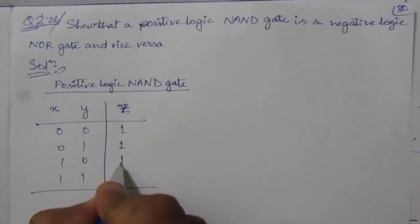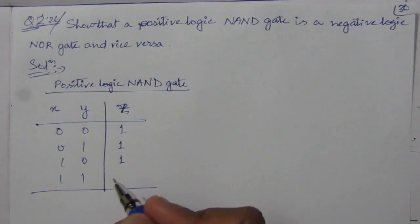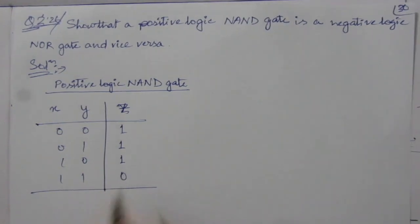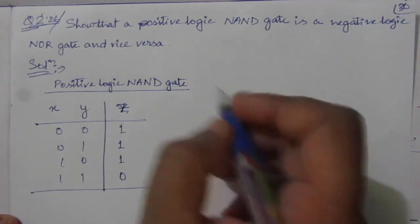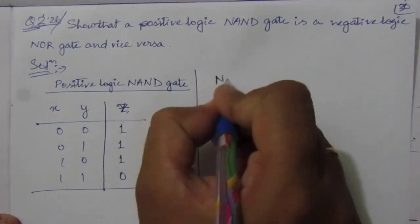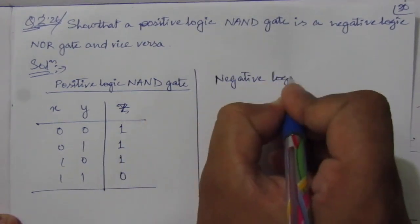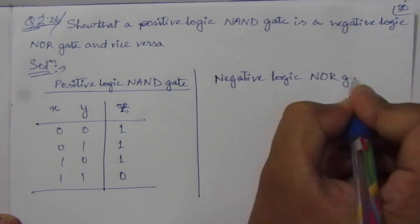For 1,0 — similarly it is 1. And for 1,1, multiplication is 1; after inversion we will get 0. So this is nothing but the positive logic NAND gate. Now we will find out the negative logic NOR gate.